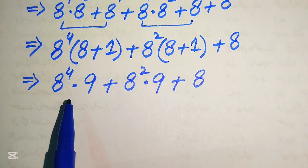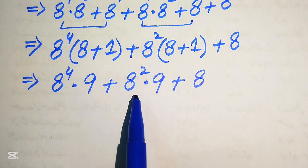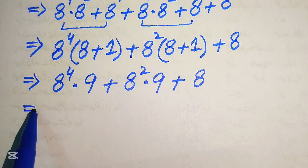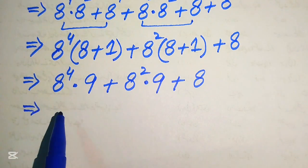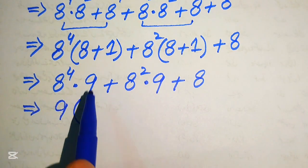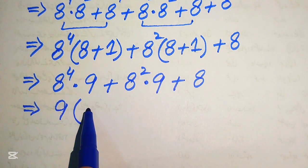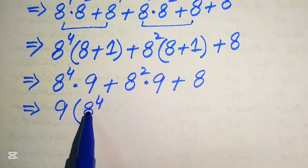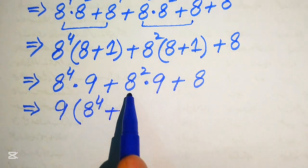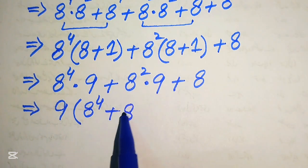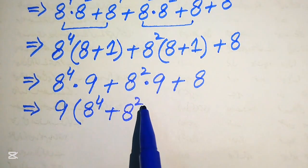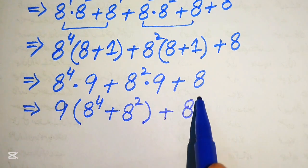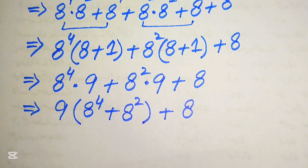Now we can see that 9 is a common term in both of these values, so we take out 9 as the common factor. The remaining values are 8 to the power of 4 plus 8 squared, plus 8.